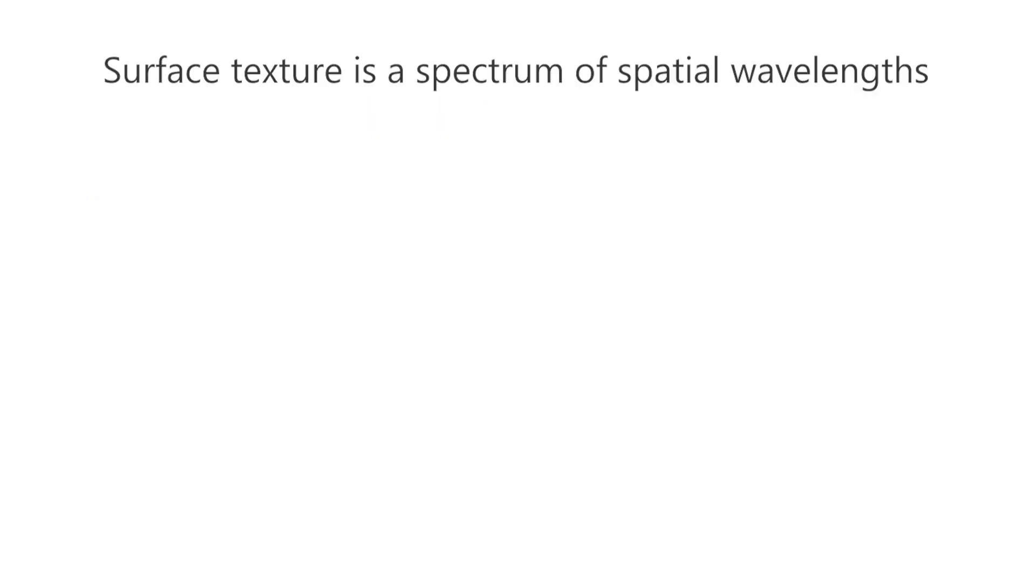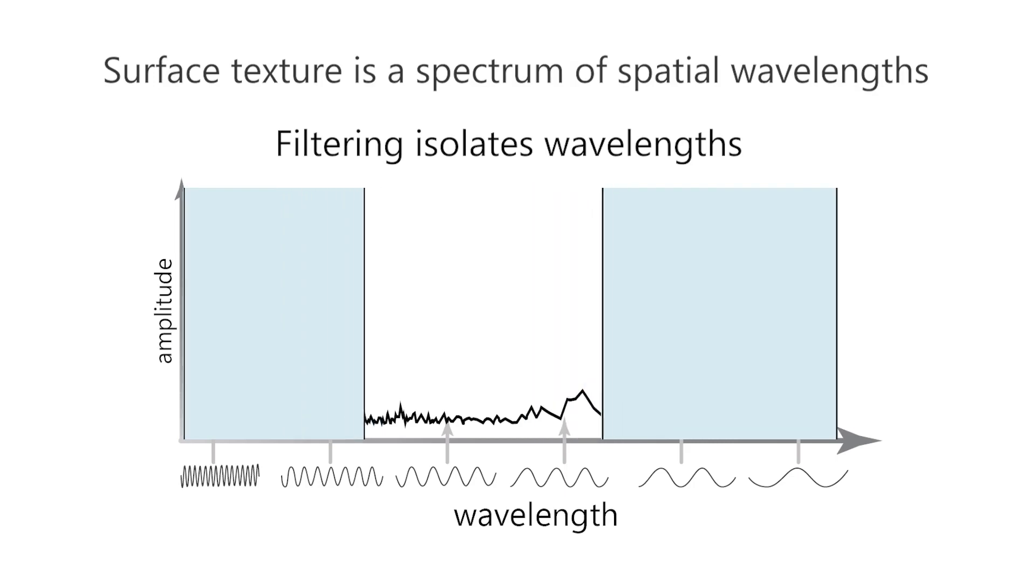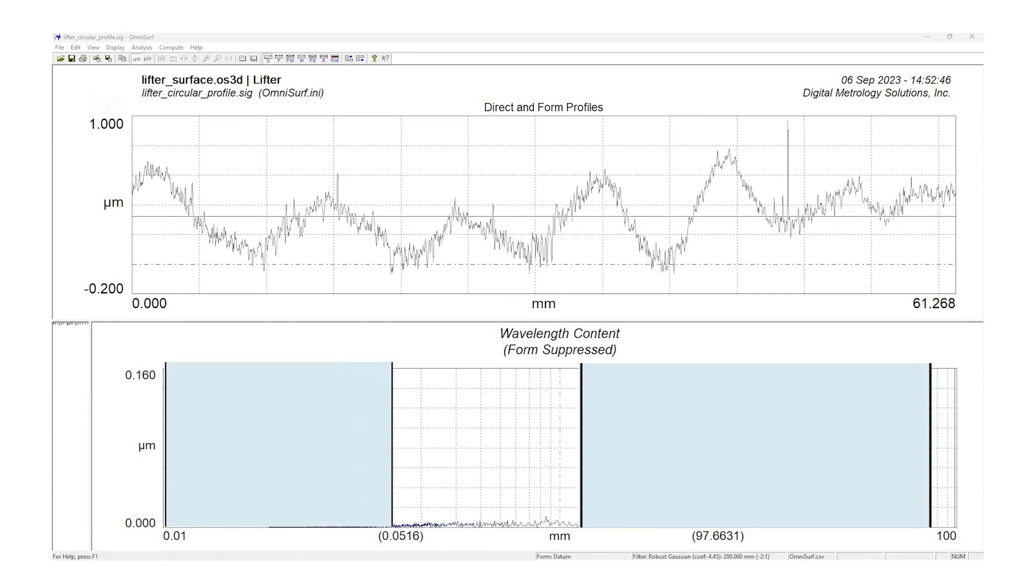We've talked about how surface texture data consists of many spatial wavelengths, and that we can filter the data based on those wavelengths to understand it better. To get to the roughness, we need to define which spatial wavelengths we are referring to as roughness.